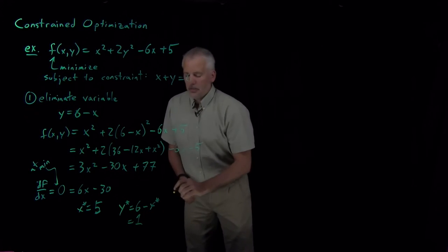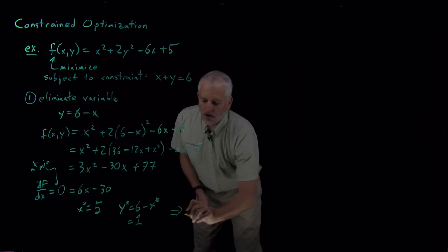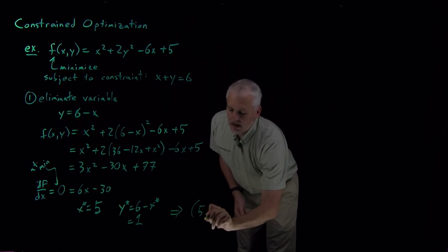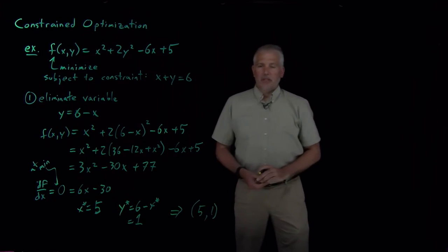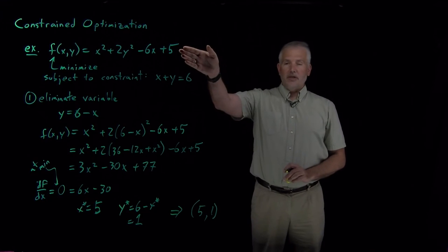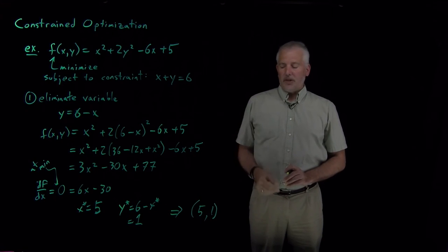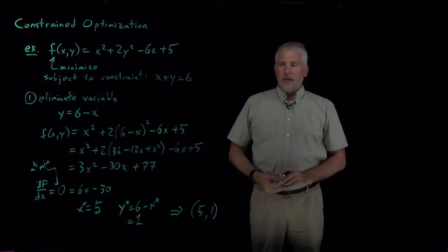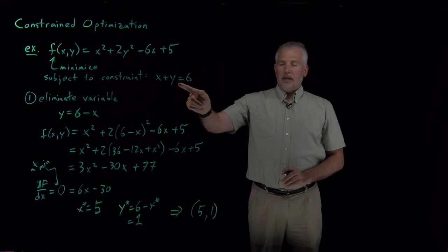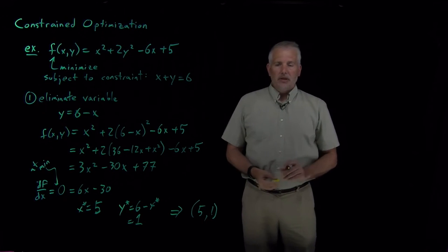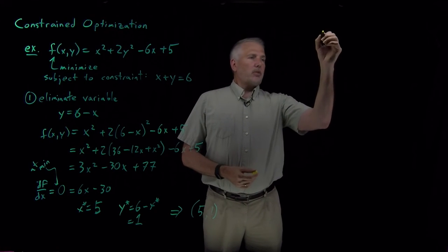So what we've just figured out is the minimum of this function occurs at not 3, 0, which is the unconstrained minimum of this function, the position where this function takes on its absolute lowest value. But 5, 1 is the value of the function that obeys this constraint.